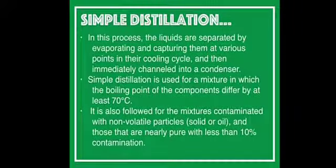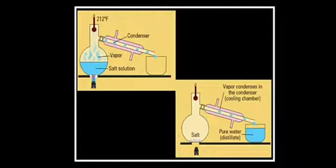In simple distillation, the liquids are separated by evaporating and capturing them at various points in their cooling cycle. In this process, the liquid is heated, then when vapours start coming, they go into the condenser and the distillates are collected. See in diagram.